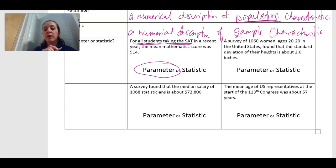Okay, so now let's look at the second example. A survey of 1,060 women ages 20 through 29 in the United States found that the standard deviation of their heights is about 2.6 inches. So again, are we looking at all women in this age bracket? No, we're looking at just this many. So this would be a statistic since we are not finding data on everybody. Okay, so I want you to look at those next two examples.